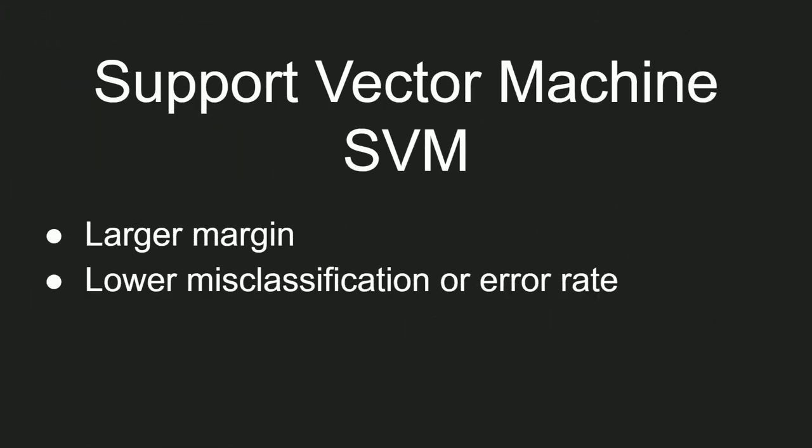In today's video, I will show you using code how different values of hyperparameters impact our classification boundary. Support vector machine is a classification algorithm that aims at creating a larger margin between two classes — class 1 and class 0 — and also to lower down the misclassification or error rate once the margin is created. This is the whole crux of how support vector machines work.